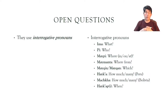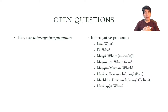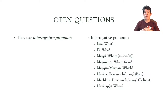Continuing the list: 'maiken' or 'maikan' in some varieties, meaning 'which'. 'Haika' or 'haika' means 'how much' or 'how many' in Peru. But in Bolivia, the form is 'machka', which comes from an older form still used in some parts of Peru — 'maychica' — also meaning 'how much'. And then 'haikapi', 'haikap', or 'haikach' all mean 'when'.